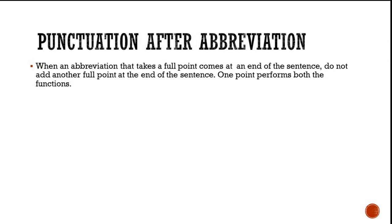Talking about punctuation after an abbreviation — sometimes a sentence might end with an abbreviation such as AM or PM. The abbreviation itself will already have a point, so there is no need to add an extra point to indicate the end of the sentence. One point will perform both functions.